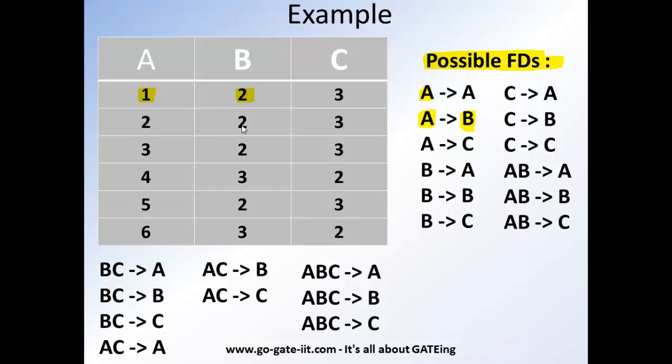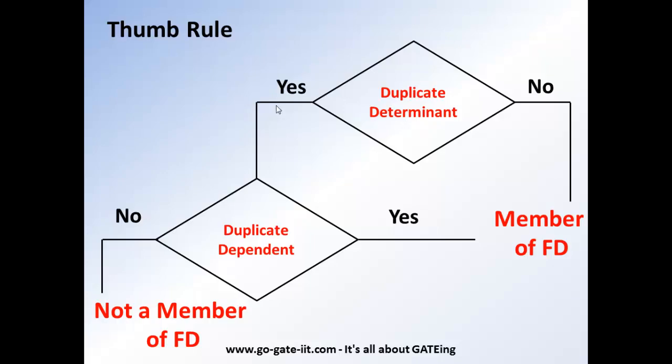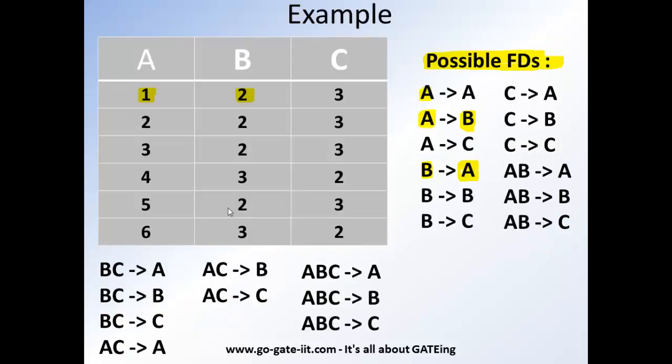Now let's take another example from here only. We have B as determinant now and A as dependent. What does this mean now? That B uniquely identifies A. Now let's check it out. So here you can notice that we have duplicate determinant case here. That means it will fall under this condition that it goes to check the dependent values. So 2 uniquely identifies 1.